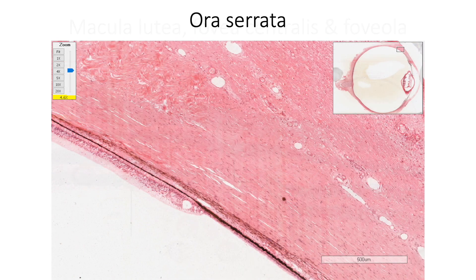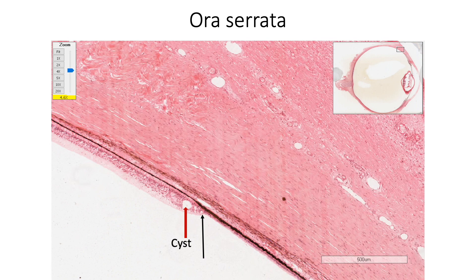At the ora serrata, the ten layers of retina are reduced to only two layers. The outer retinal pigment epithelium continues as the pigment epithelium of the ciliary body, while the inner nine layers of the neural retina are reduced to a single layer of non-pigmented epithelium of the ciliary body. Cysts in the neural retina close to the ora serrata can also be seen.